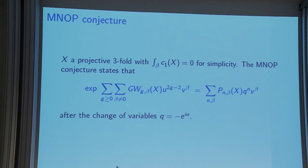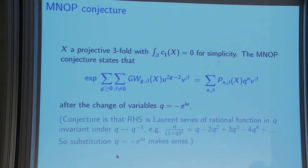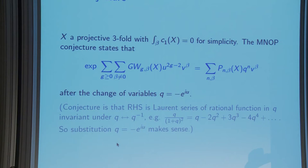The MNOP conjecture is a relationship between stable pairs and Gromov-Witten theory. Again you're not supposed to understand this preposterous formula, but you turn connected Gromov-Witten theory into a disconnected theory by taking an exponential, then get the stable pair theory after a crazy change of variables. All you need to understand is that the two sets of invariants contain the same information, and there are integers underlying Gromov-Witten theory. The change of variables makes sense because part of the conjecture is that the right-hand side is the Laurent series of a rational function.